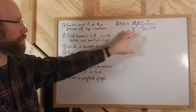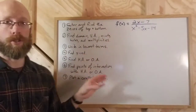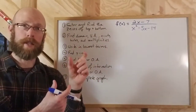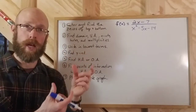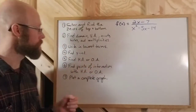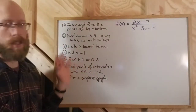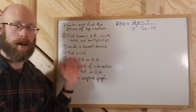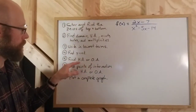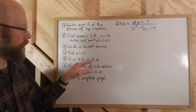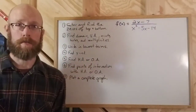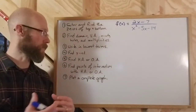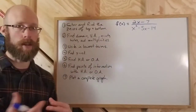Then we're going to write the fraction in lowest terms, if possible — so if there's a factor common to the top and bottom, you cancel them out. Then we find the y-intercept, which is a fairly simple step. Then we look for the horizontal and oblique asymptotes. There's only going to be one — it can't have both a horizontal and an oblique.